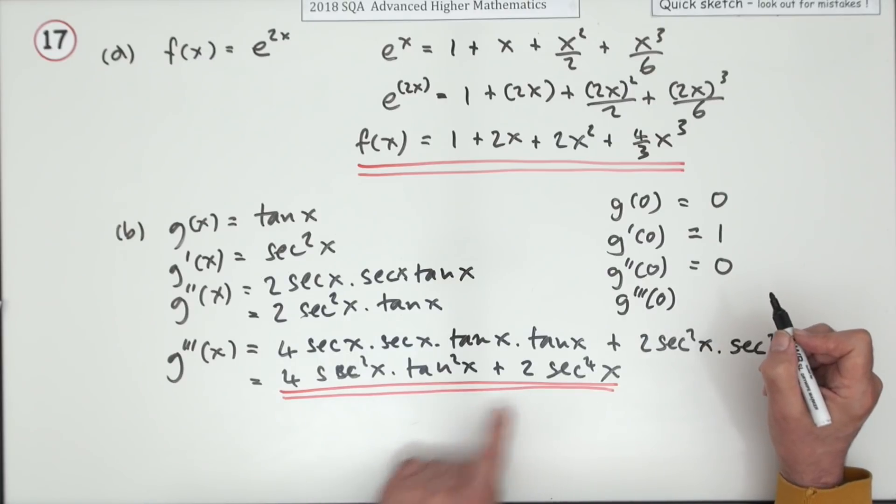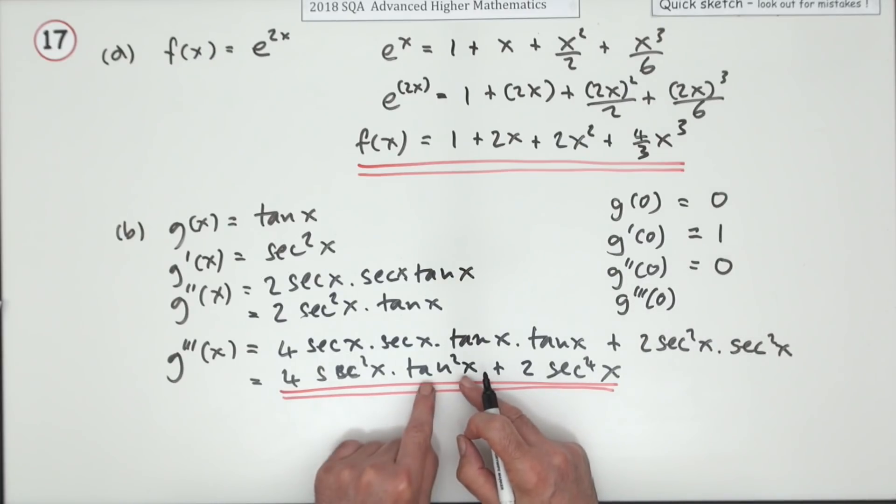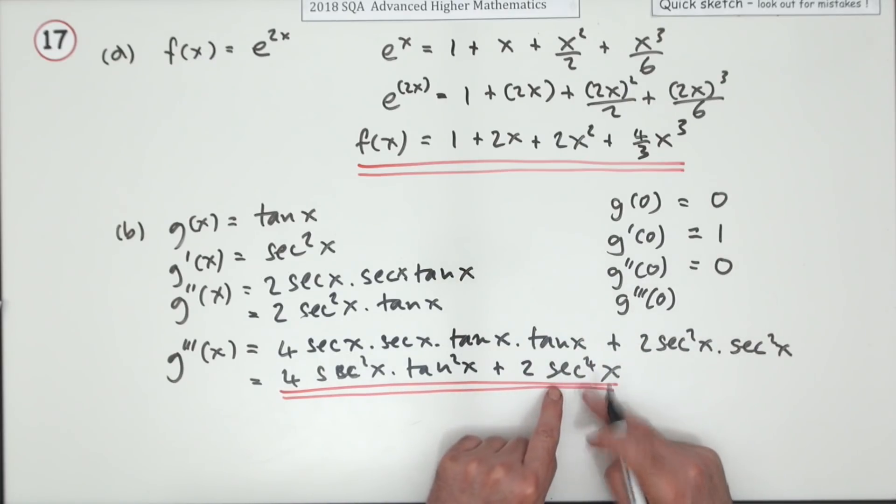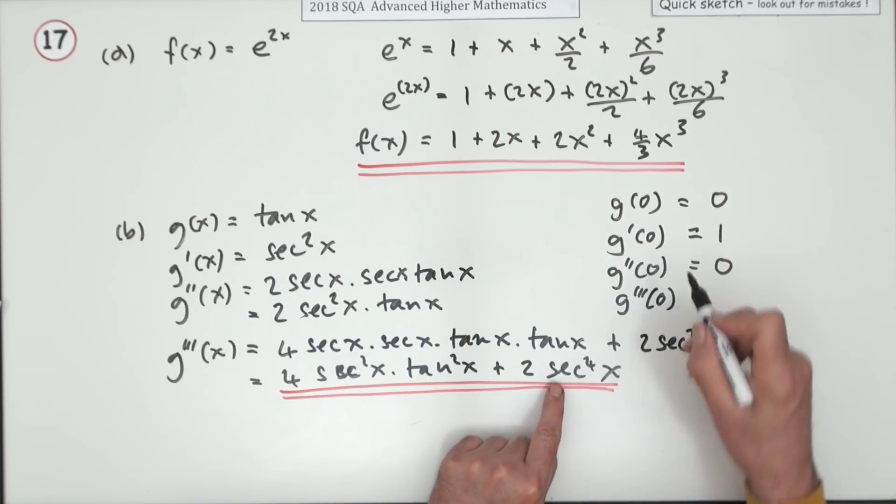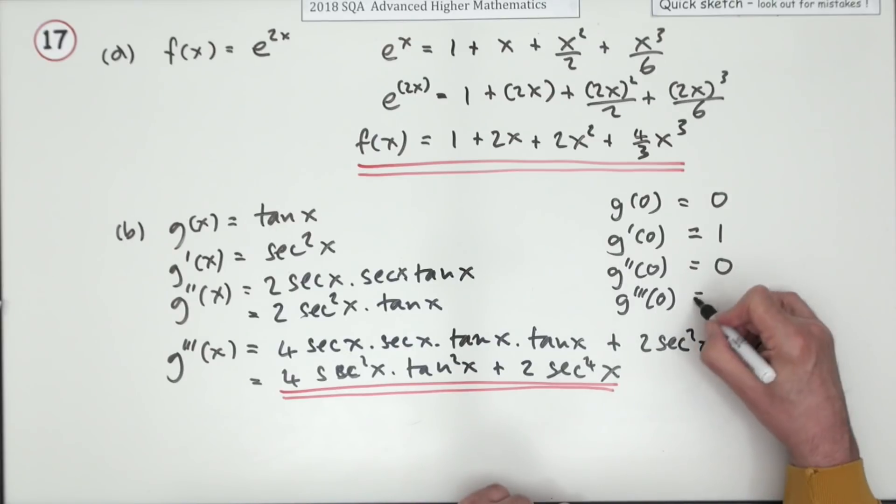The third derivative. Well it's these two parts here. That's got a product with a tan in it so that's zero. So you're just left with this. Sec, one over cos, so that's one over one which is one. Power four, still one. Doubled, that's a two.